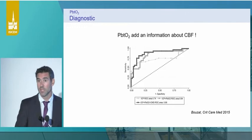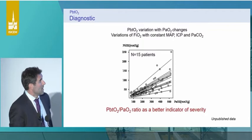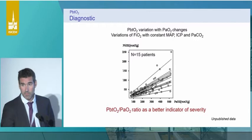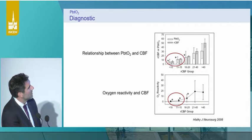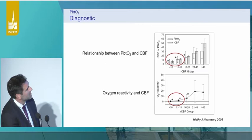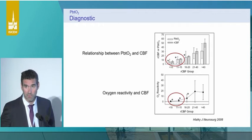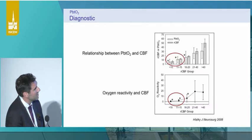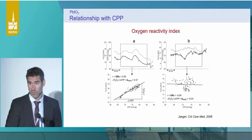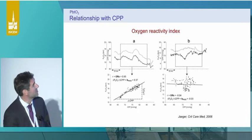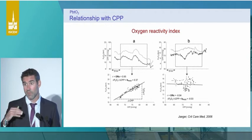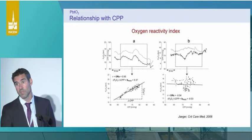Regional CBF is really important to link low PbtO2 to regional CBF. When you have a low PbtO2 value, you have a low CBF. And most importantly, oxygen reactivity is also impaired when you have a low CBF at the bedside, meaning you cannot improve PbtO2 very much by increasing FiO2. Some also try to link CPP and PbtO2 — they call this the oxygen reactivity index. It's a way to adapt CPP to have the best PbtO2 for a given CPP, potentially a way to individualize CPP at the bedside.